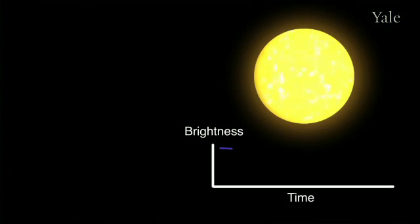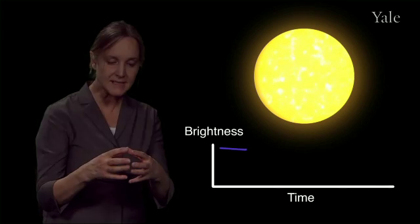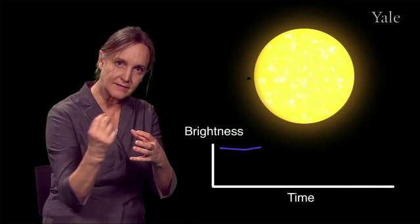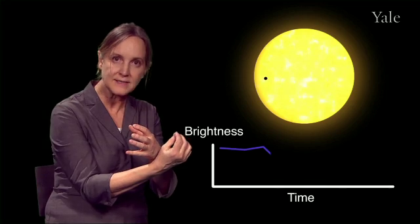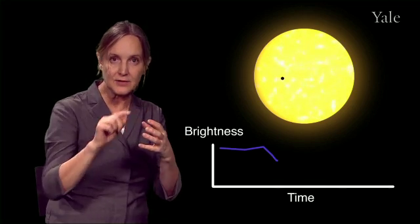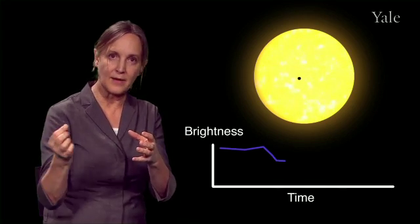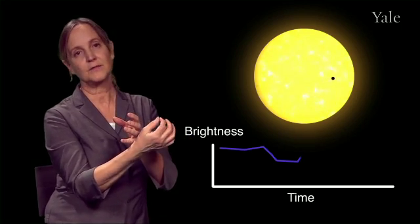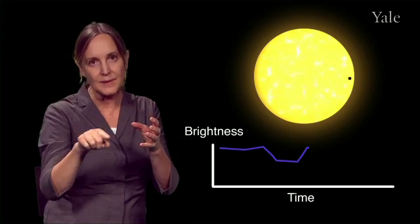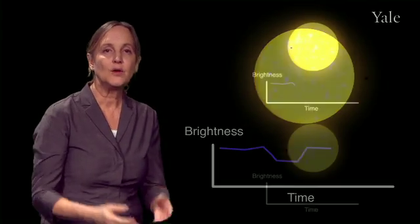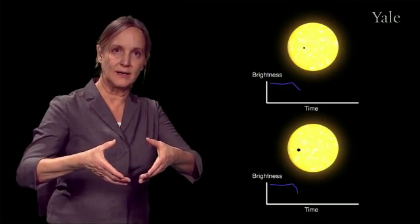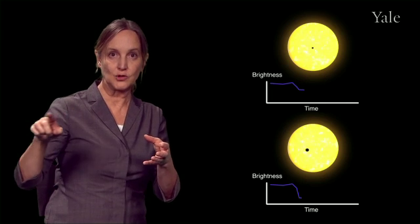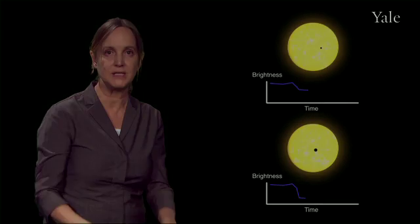Another technique is called the transit method. With this method, the planet passes in front of the host star and causes the starlight to dim ever so slightly. It takes about three hours for a planet to go across the face of its star, and so for three hours we'll see a little dip in the brightness of the star. You can imagine that if the planet is very large, the depth of that transit will be much deeper.